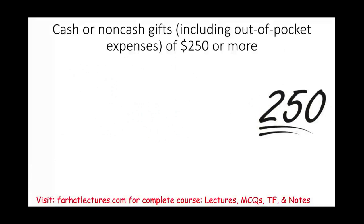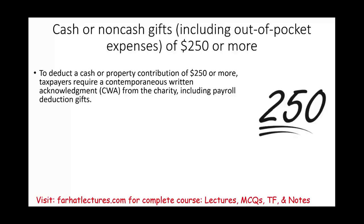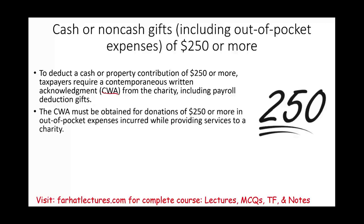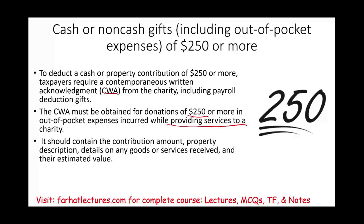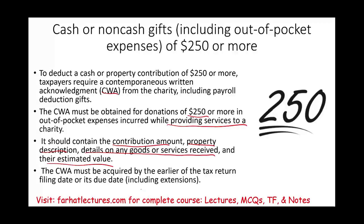For cash or property contributions of $250 or more, taxpayers require a contemporaneous written acknowledgement (CWA) from the charity, including for payroll deduction gifts. The CWA must also be obtained for out-of-pocket expenses of $250 or more incurred while providing services to a charity. The CWA should contain the contribution amount, property description, details on any goods or services received and their estimated value, and must be obtained by the earlier of the tax return filing date or the due date including extensions.